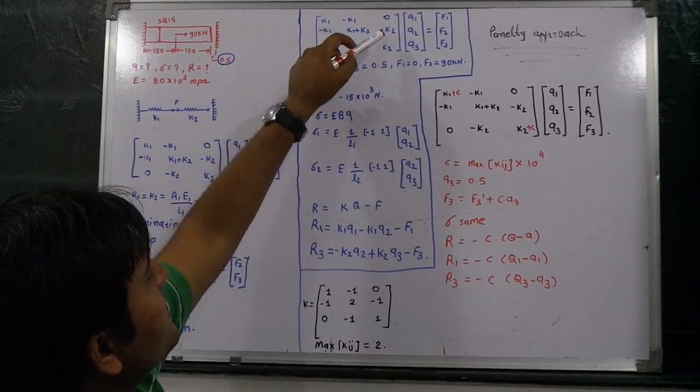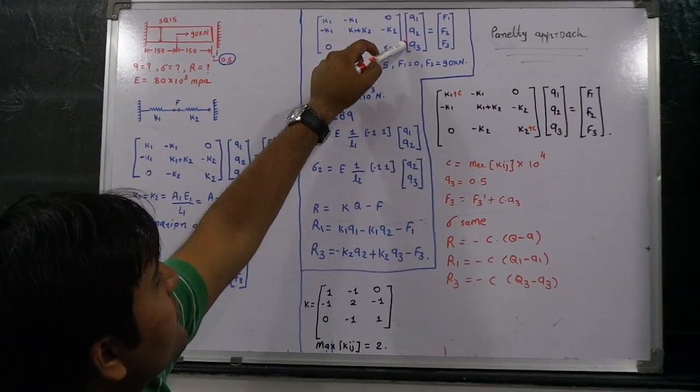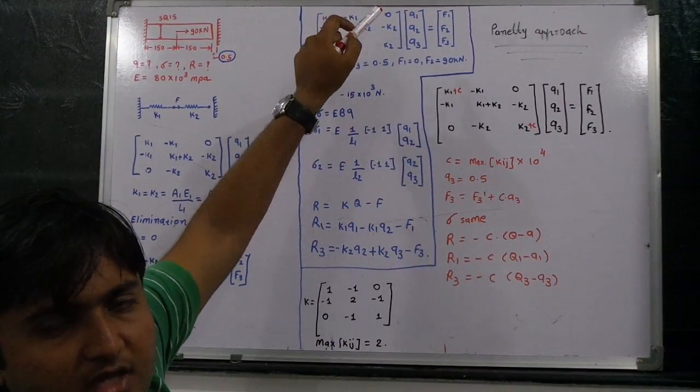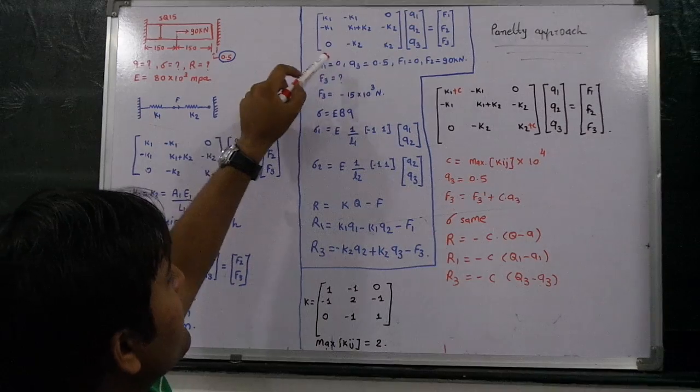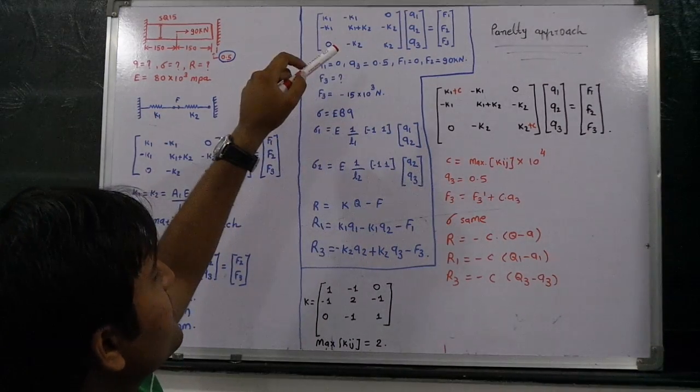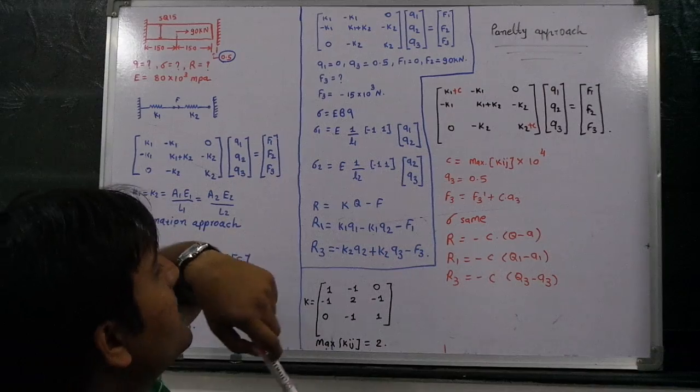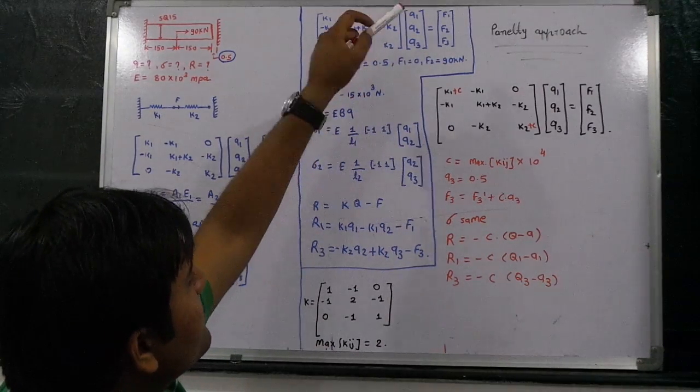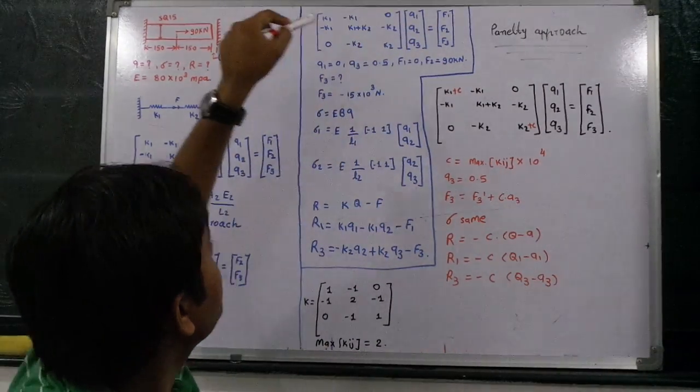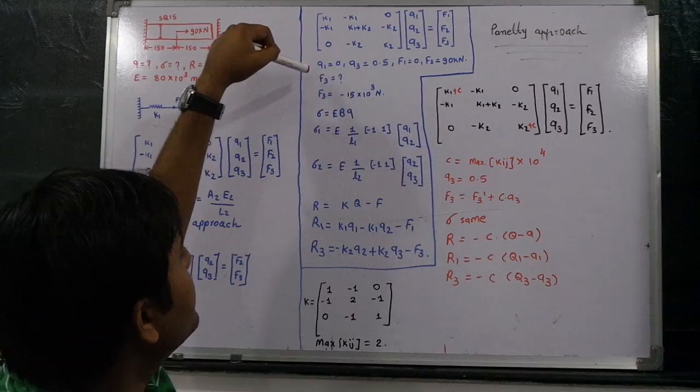Putting that value, K1 and K2 values are known. Q1 Q2 and Q3 values as per given data, Q1 is equal to 0, Q2 we are not knowing, but Q3 is equal to 0.5, and F2 is equal to the 90kN load acting on the body.